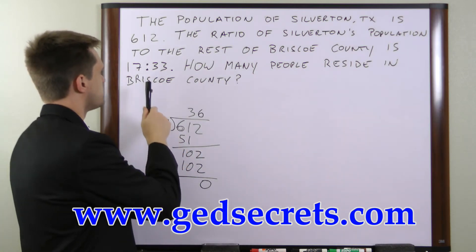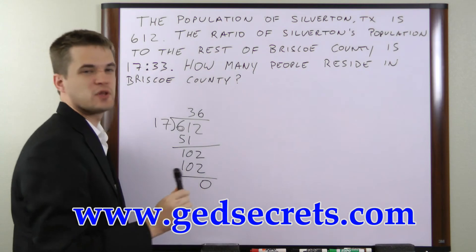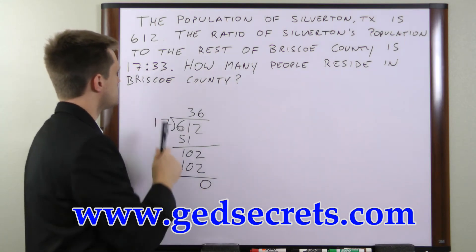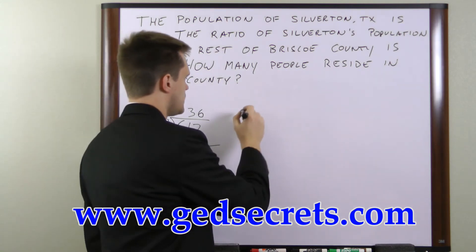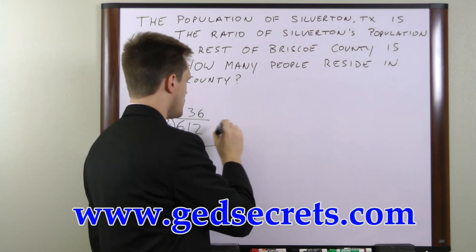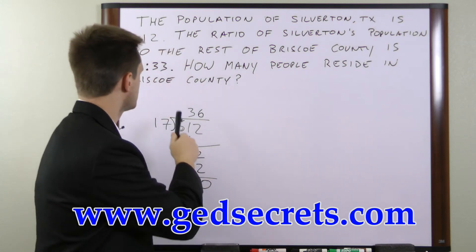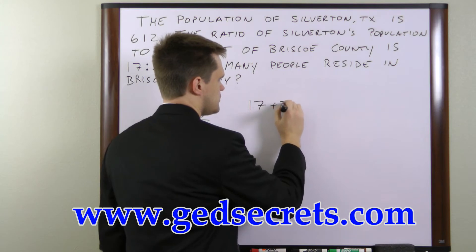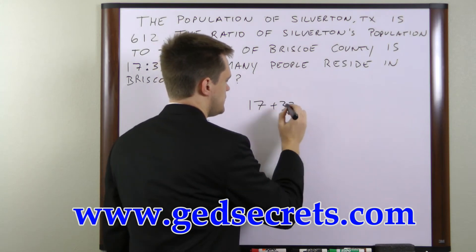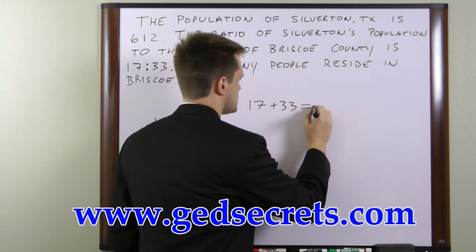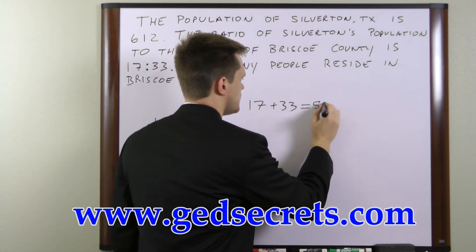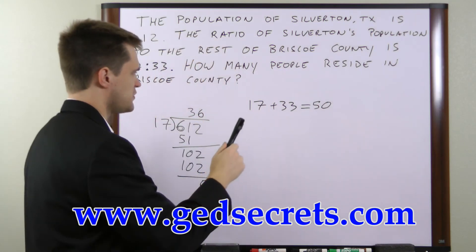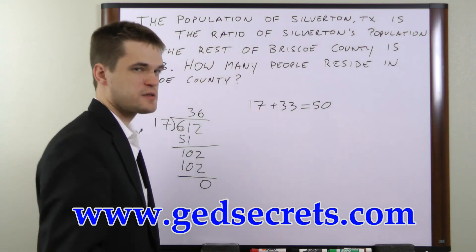Now to figure out how many people live in the county, we're going to add the two ratio numbers together and then multiply that number by 36. So we have 17 plus 33, which equals 50. Now we have to multiply 50 by 36.